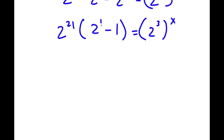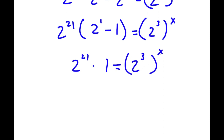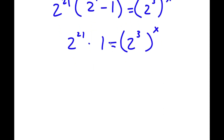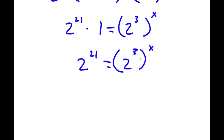2 to the power of 1 is equal to 2, and 2 minus 1 is 1. So I'm left with 2 to the power of 21 times 1 is equal to 2 to the power of 3 to the power of x. Anything times 1 is simply itself, so 2 to the power of 21 times 1 is simply 2 to the power of 21, which is equal to 2 to the power of 3 to the power of x.